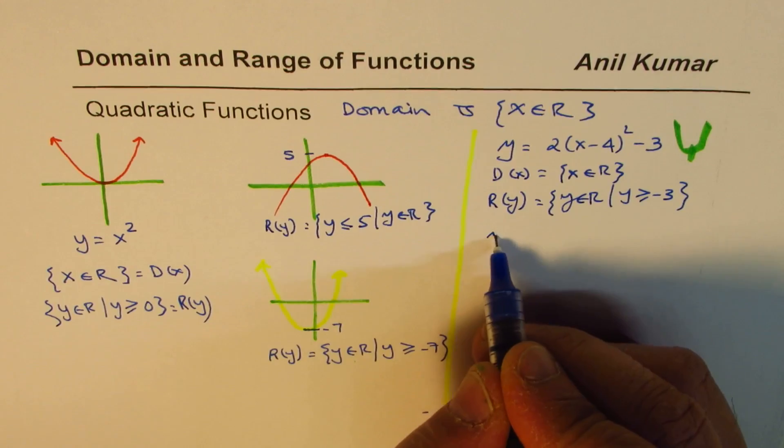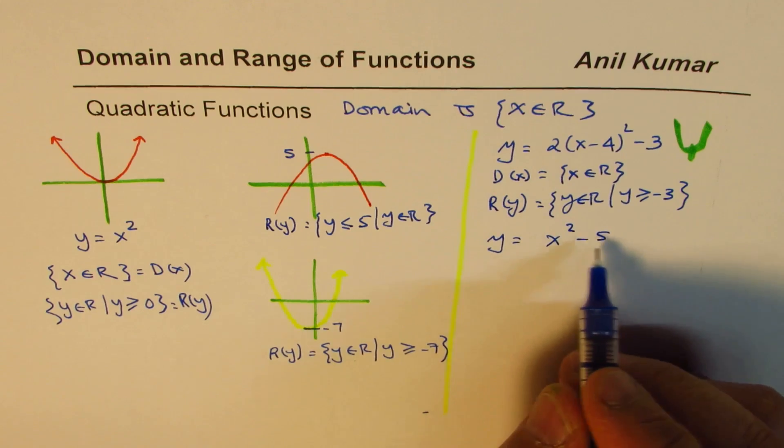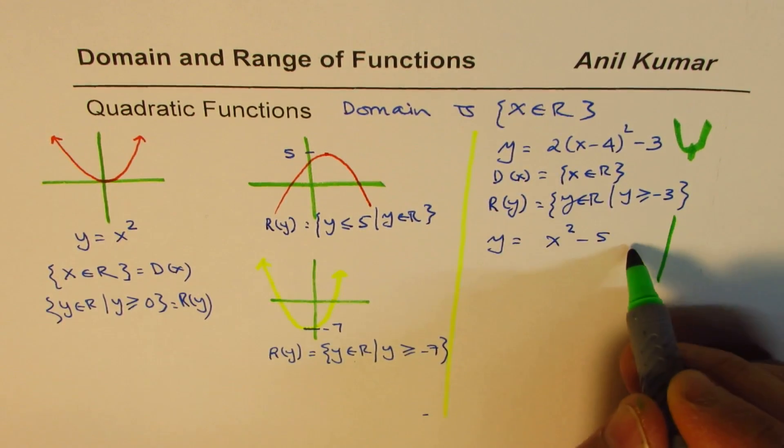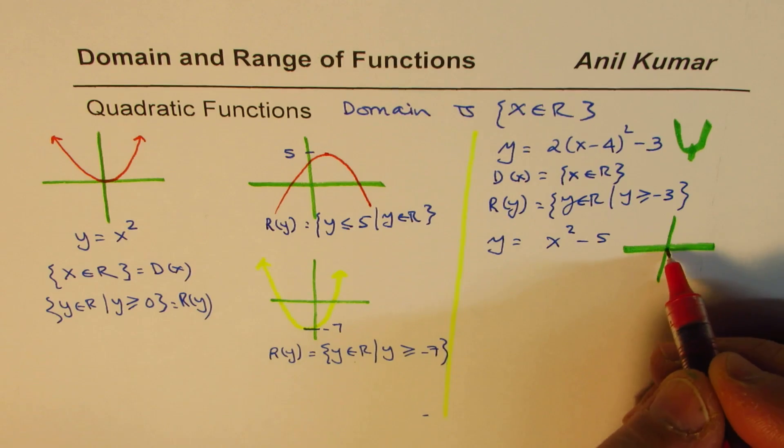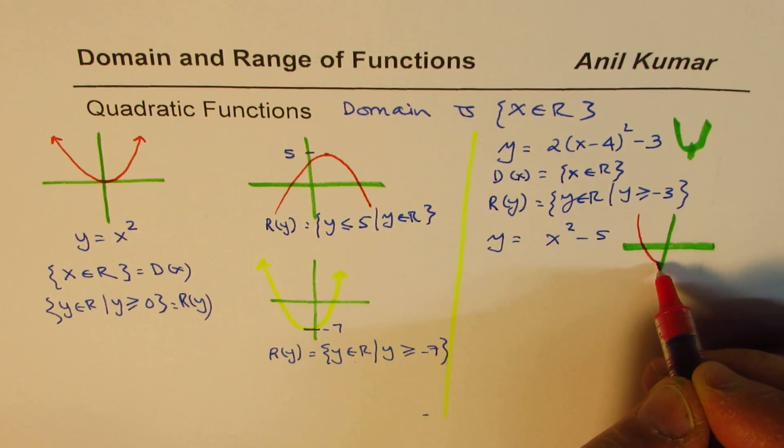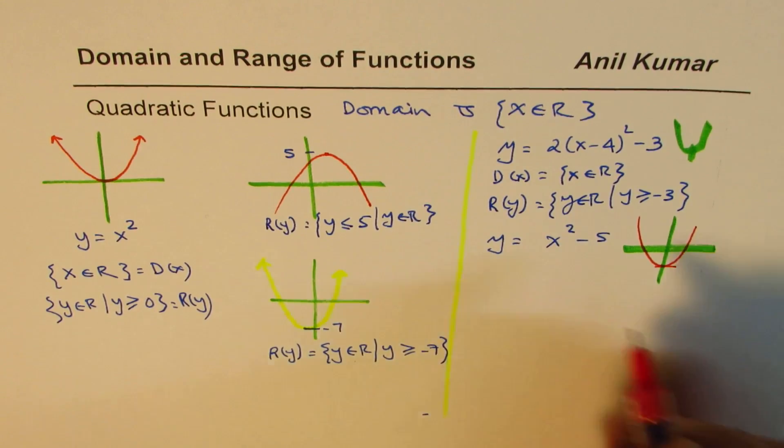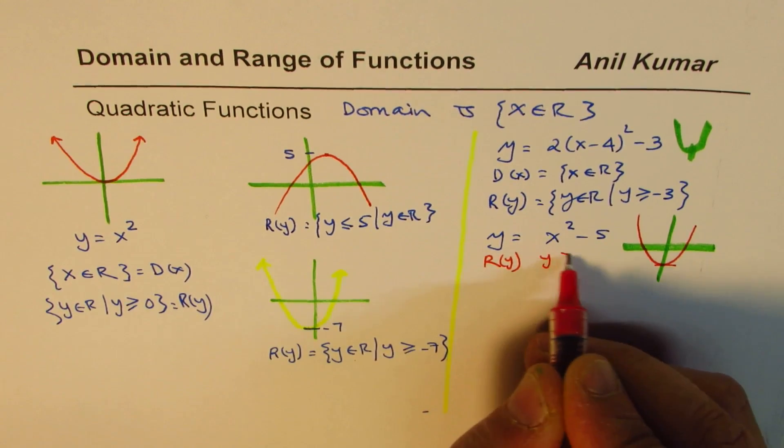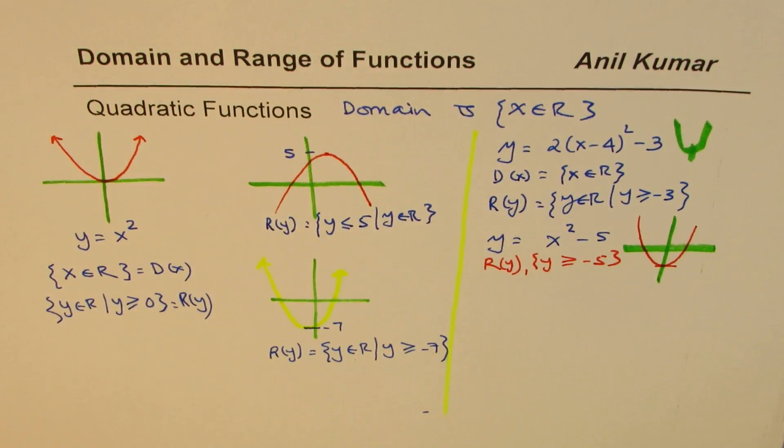We could be given an equation like y equals x squared minus 5. Now for this, think like this. This is x squared minus 5. That means x squared has been moved 5 units down. So we know for this function, range is y value is greater than or equal to minus 5. That is so easy.